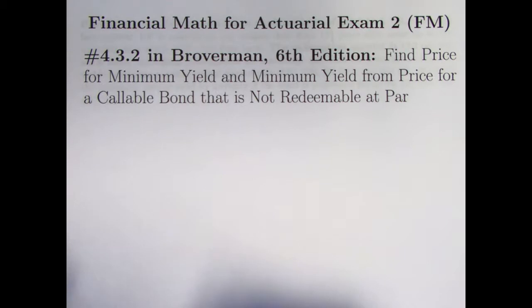And this problem, 4.3.2, we are pretty much doing the same thing except with a modification at the end. We are going to be finding the price from minimum yield and minimum yield from a given price for a callable bond, but this time it's not going to be redeemable at par. You're definitely going to want to watch the preceding video first before watching this one. I'm going to go a lot faster in this one.